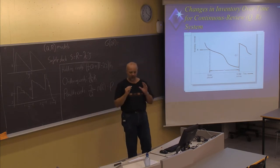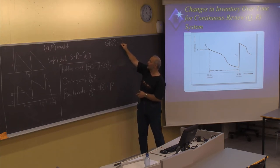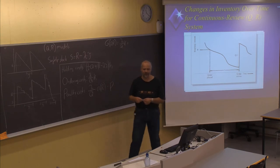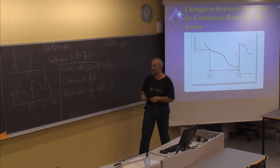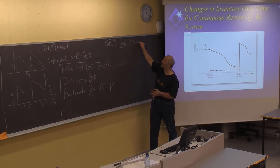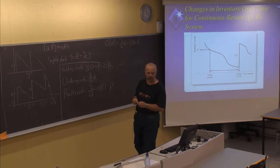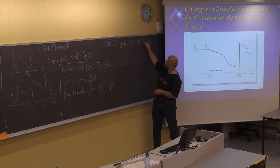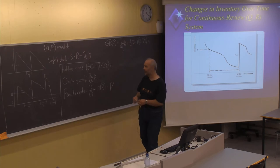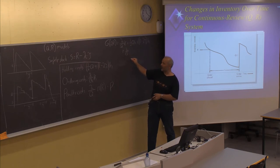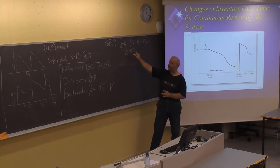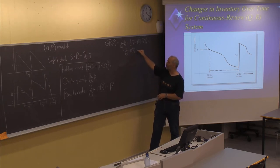We have the ordering cost, or the setup cost, which is still the demand divided by Q, multiplied by K, plus the holding cost, which is now split in two: both the cyclic inventory and the safety stock. The cyclic inventory is one-half Q multiplied by the holding cost, plus R (the reorder point) minus the demand in the lead time, multiplied by the holding cost. In addition, we include the penalty cost, which is the number of cycles in the full year, multiplied by the expected number of units short per cycle — a function dependent on R, the reorder point — and multiplied by the penalty per item.